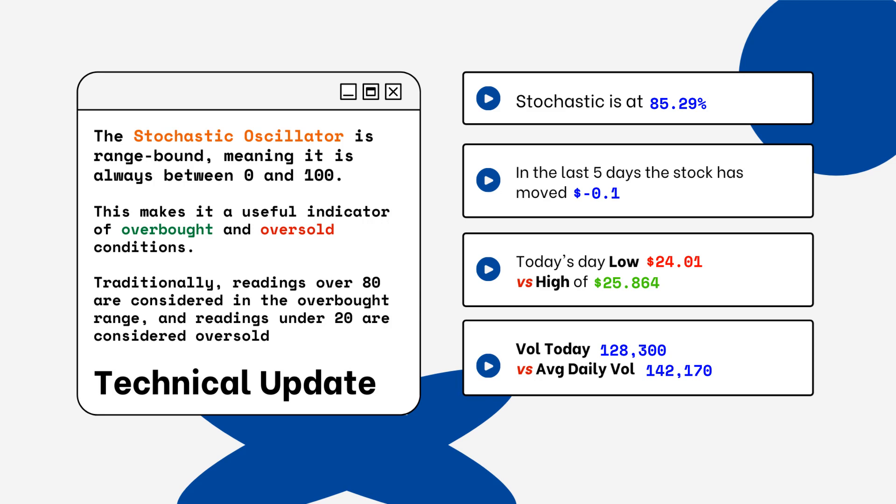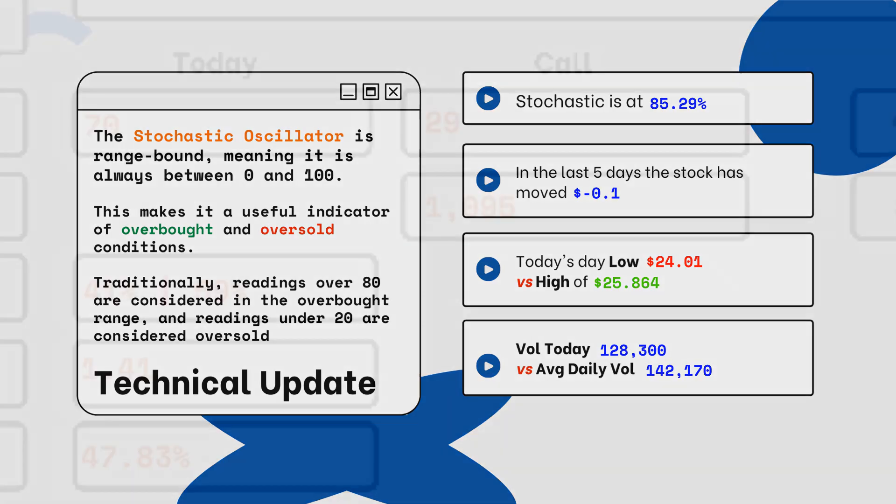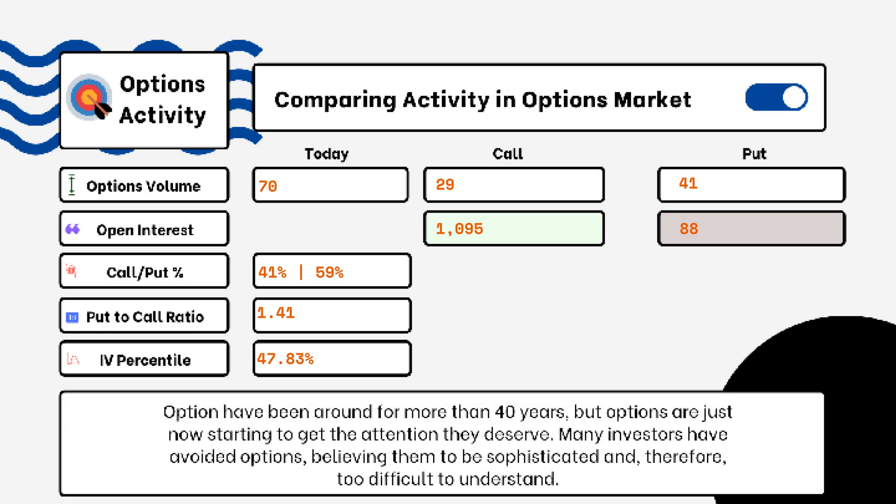We've also provided today's volume of shares traded and the average daily volume. You want to see how much volume is being traded and if it is above or below the average daily volume level — this tells you how relevant the move is from the stock today.